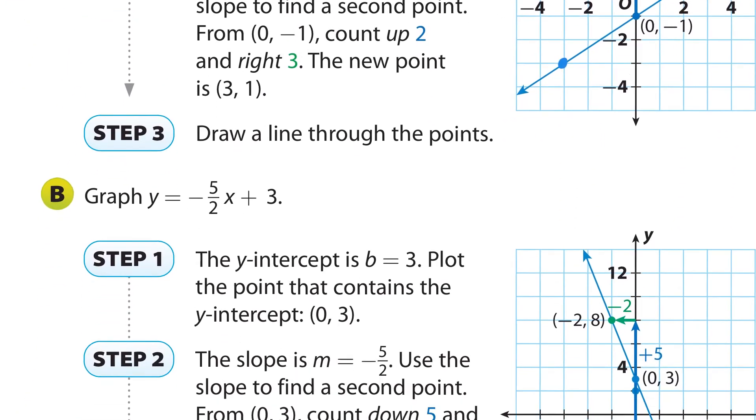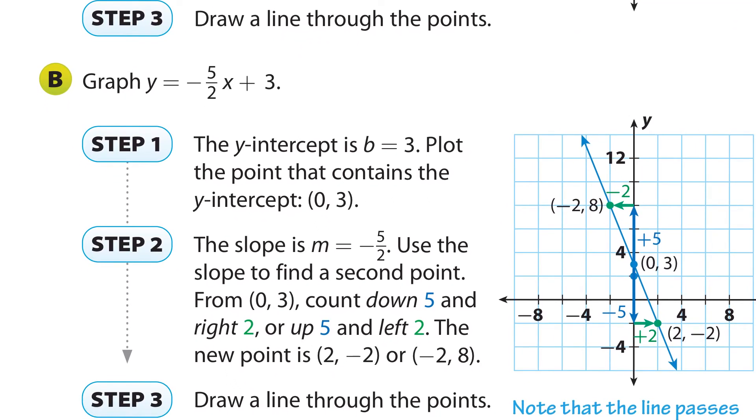And we have a second example here, where we have our y-intercept. Again, I'm going to write y equals mx plus b. Now, this time, b is a positive. That's pretty easy to see. b is positive three. And we have, what, if that's four, then that's two. And three is right there. So three is the y-intercept.